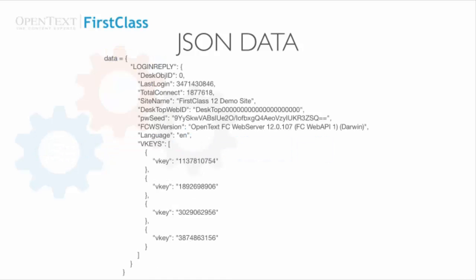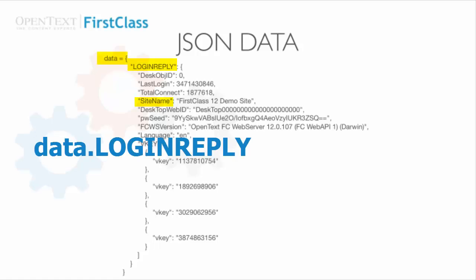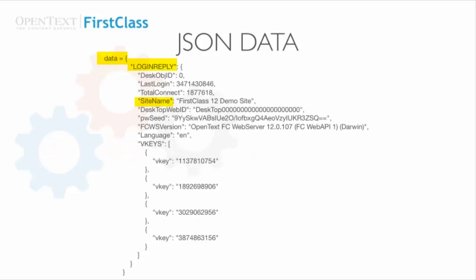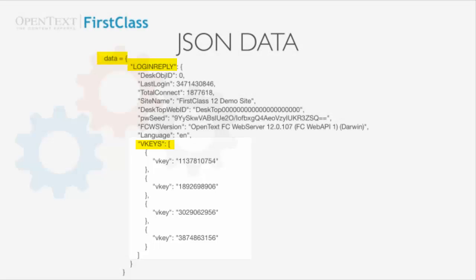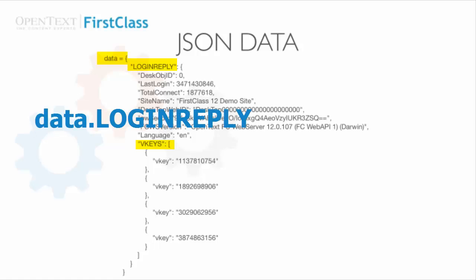In this last example, we see an abbreviated format of what is returned after a successful login. To retrieve the site name, we use data.loginreply.siteName. The loginreply.vkeys value is an array of objects. In the real response we get 10 vkey objects in the array, but I'm only showing 4. The vkey array of objects is retrieved using data.loginreply.vkeys. If we want to retrieve a specific value — the second item in the array, array value 1, and the vkey key in the object — we use data.loginreply.vkeys[1].vkey.